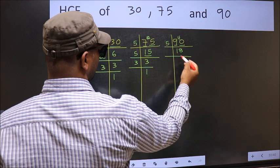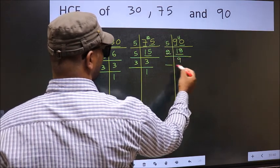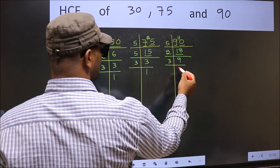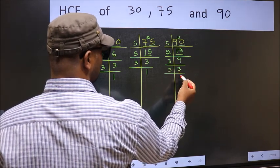5 eights 40. Now 18 is 2 times 9 is 18. 9 is 3 times 3 is 9. Now 3, 3 is a prime number so 3 times 3.